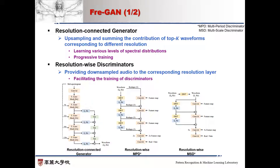In addition, it is trained progressively. The training starts with low resolution and then shifts attention to higher resolution. By progressively learning finer details, we can speed it up and stabilize the adversarial training.